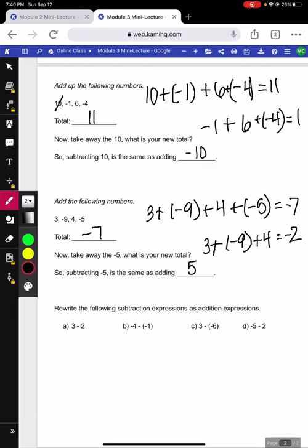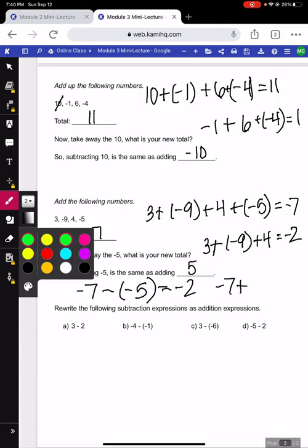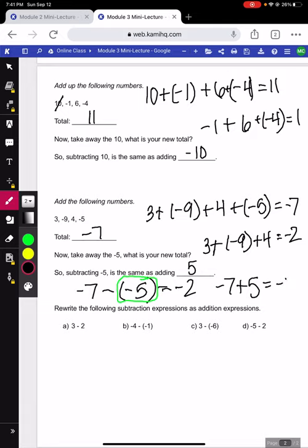So as we talked about above, when we change a statement, for example, here we had negative 7 minus negative 5 was negative 2. We can rewrite that as addition. We want the opposite of this number. Opposite of negative 5 would be positive 5. Negative 7 plus 5 is negative 2.